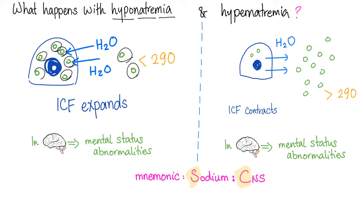How about hypernatremia? Lots of sodium in the plasma — water follows sodium. Water flows from the ICF to the ECF compartment. The ICF compartment contracts. If this is your brain, you get mental status abnormalities.